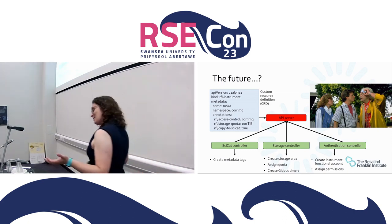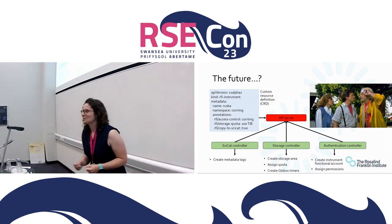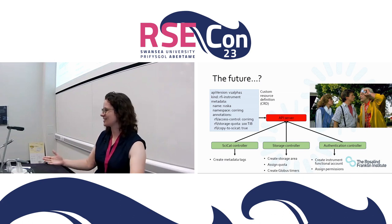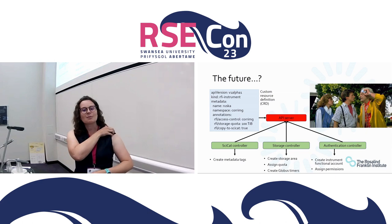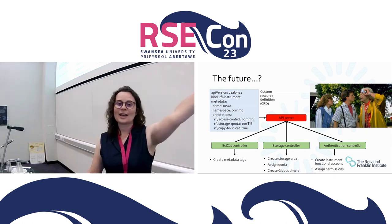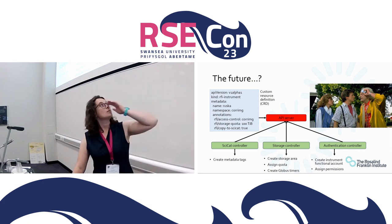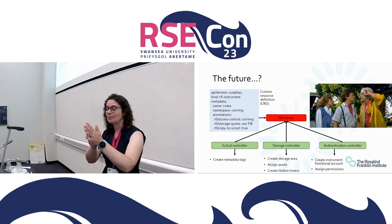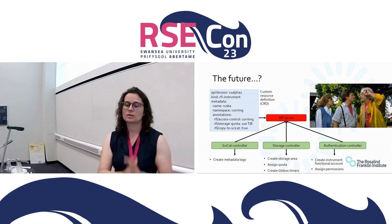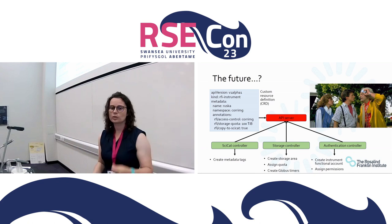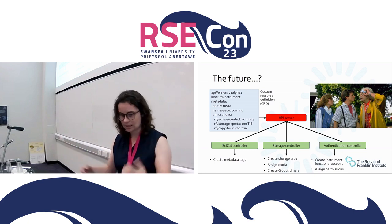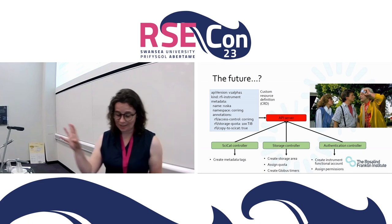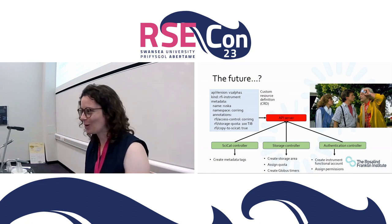Looking to the future — where do we want to go? What we would love to do is leverage the power of Kubernetes. On the left we have a config map in Kubernetes representing an instrument. When we have a new instrument or want to make changes, all we do is edit our config map. We pass it to an API server, we can set up our SciCat controller to create all the metadata, our storage controller to assign quotas and create transfers in Globus, and then our authentication controller to say who can access this data. Authentication is the hardest part, but it's probably a whole talk on its own.